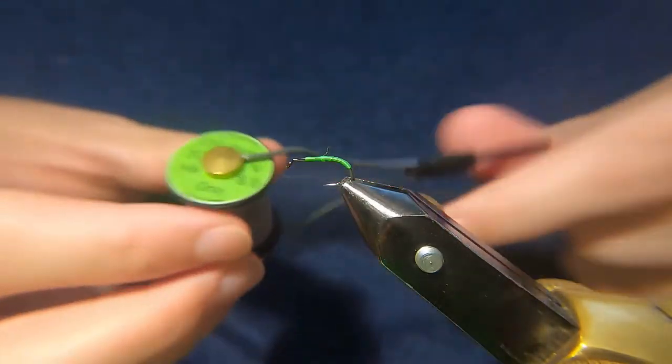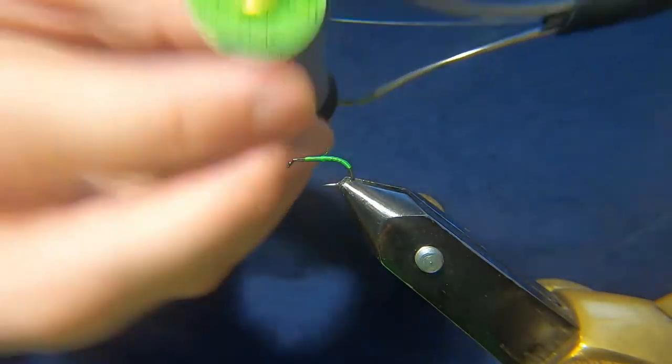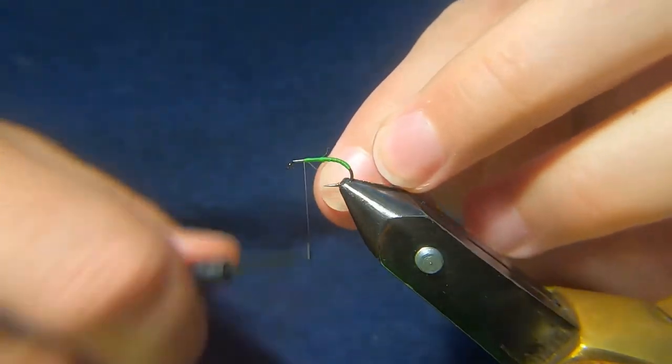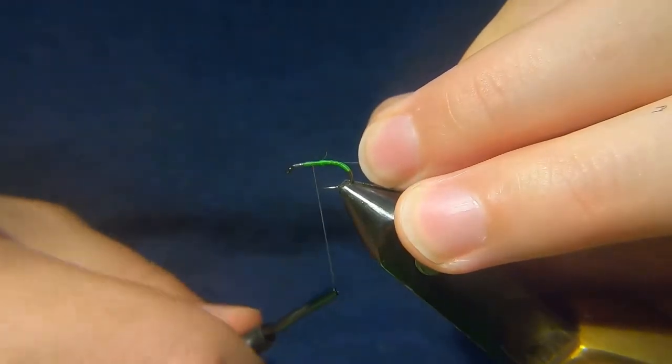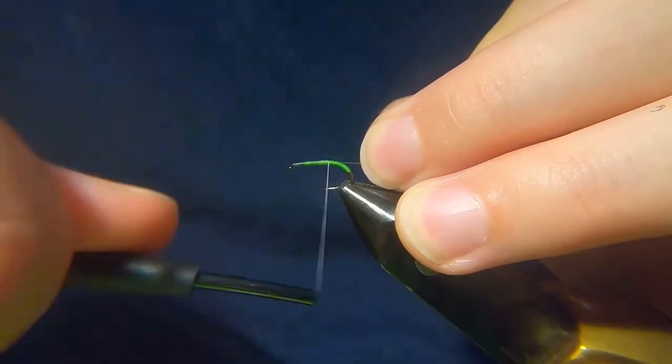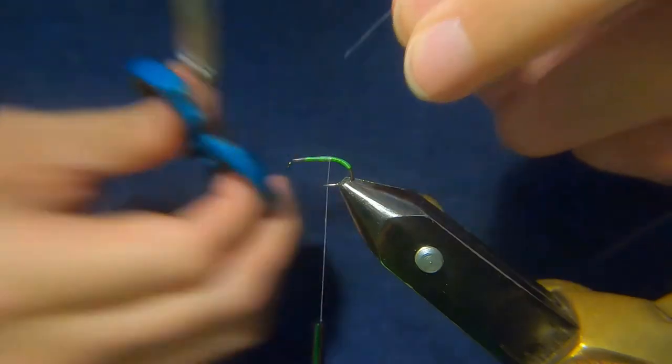For the thread we're now going to use a uni thread in grey and this is an 8-0 I think, yep, 8-0. So I've already waxed this thread, so it might appear slightly lighter on camera than it actually is.